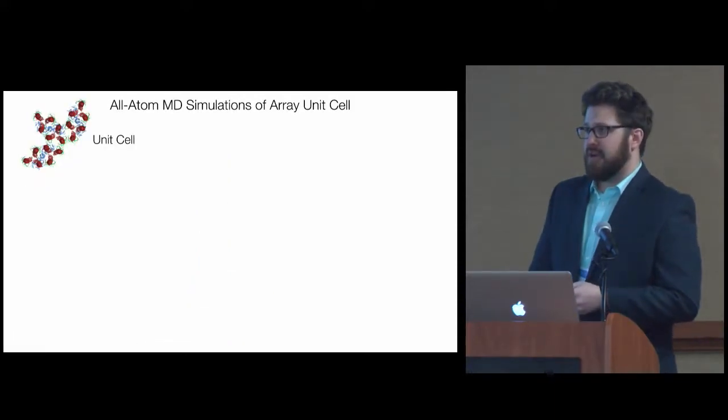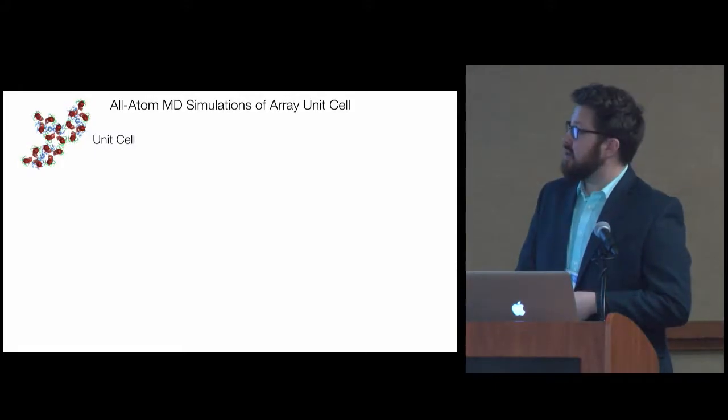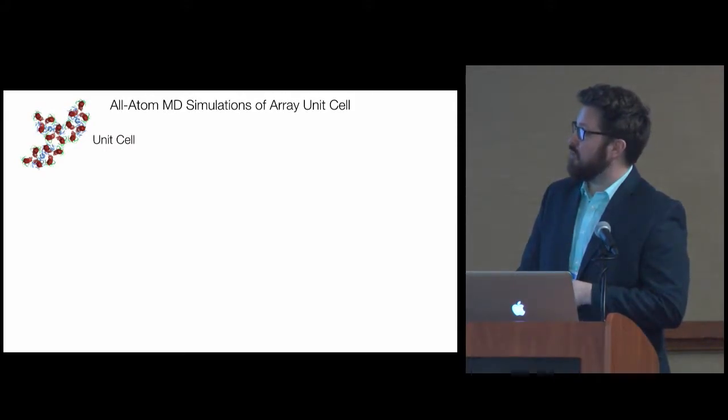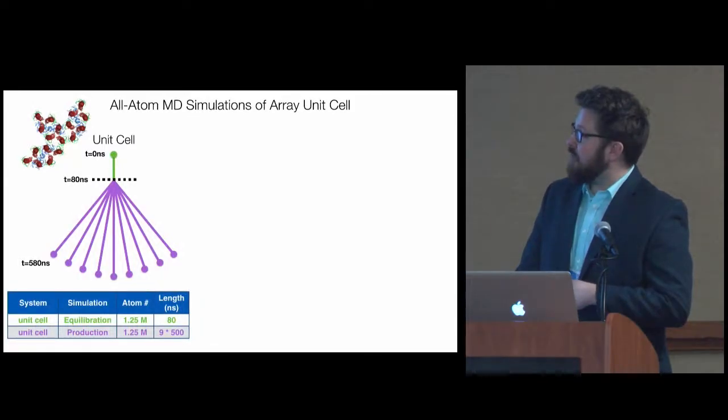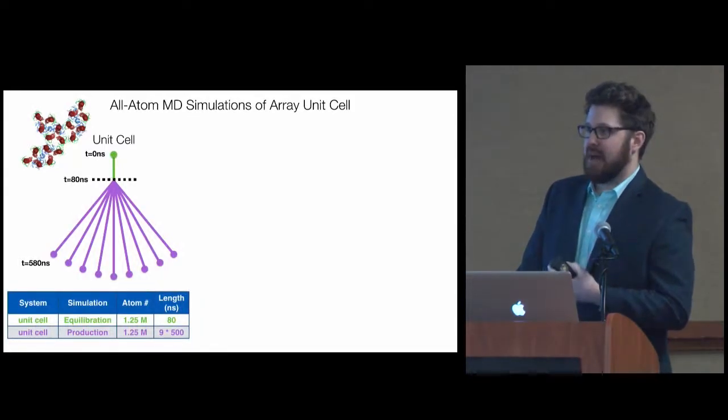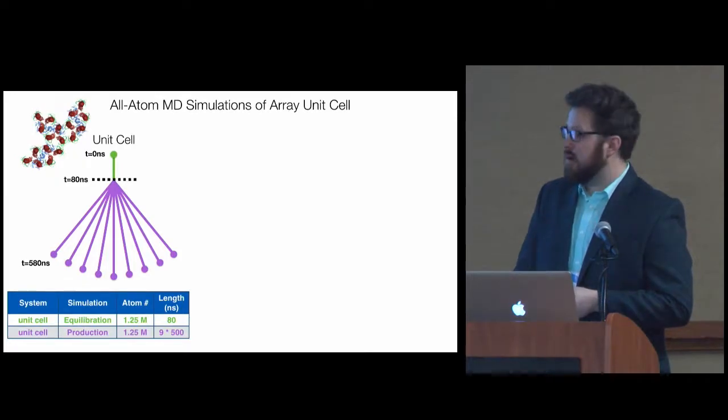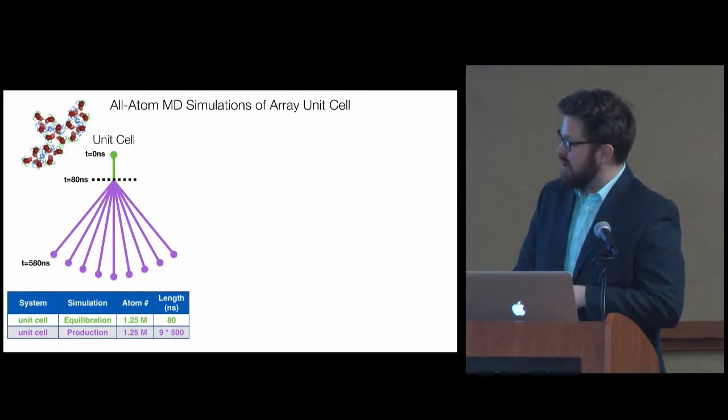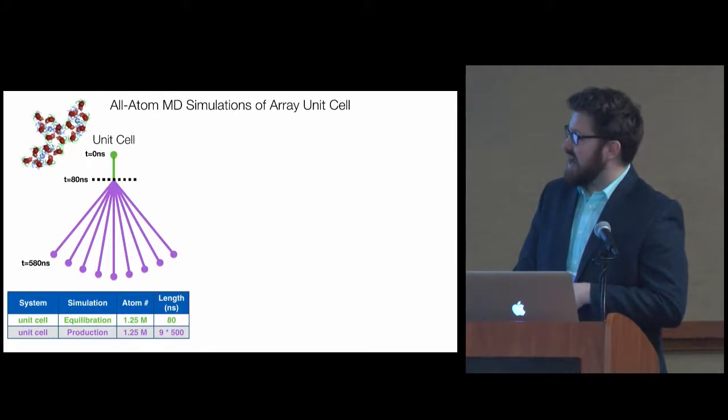Now that we have a model, we wanted to go ahead and see what we could learn from it. This is the trimer model I showed. It's a minor rearrangement to get the actual fundamental unit cell of the array. Doing that, we can use periodic boundary conditions to simulate a bulk array. Our strategy was to basically, after a long equilibration, split simulations off with a new seed to enhance the statistics. We ran nine half-microsecond simulations of this unit cell system.